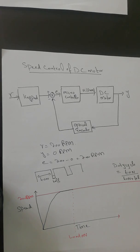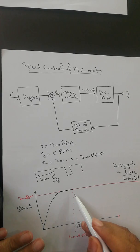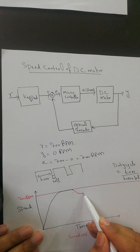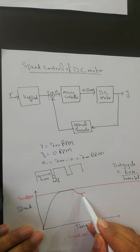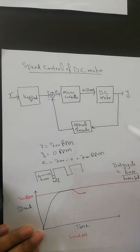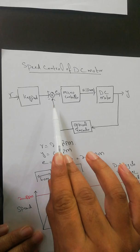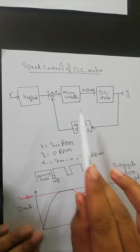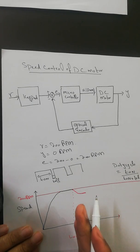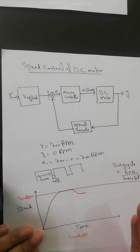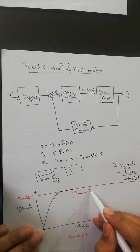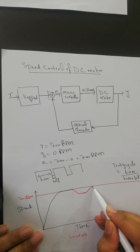When you apply the load suddenly, the speed of the DC motor starts decreasing. There is a disturbance in terms of load, the error comes back, and the microcontroller reads this error. Because the speed is now less than the desired value, the microcontroller starts increasing the duty cycle more, and your output again reaches 200 RPM.